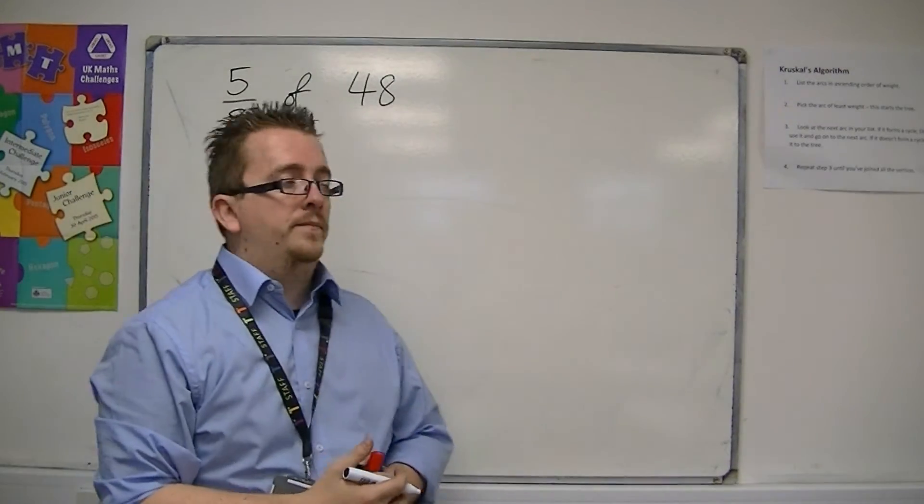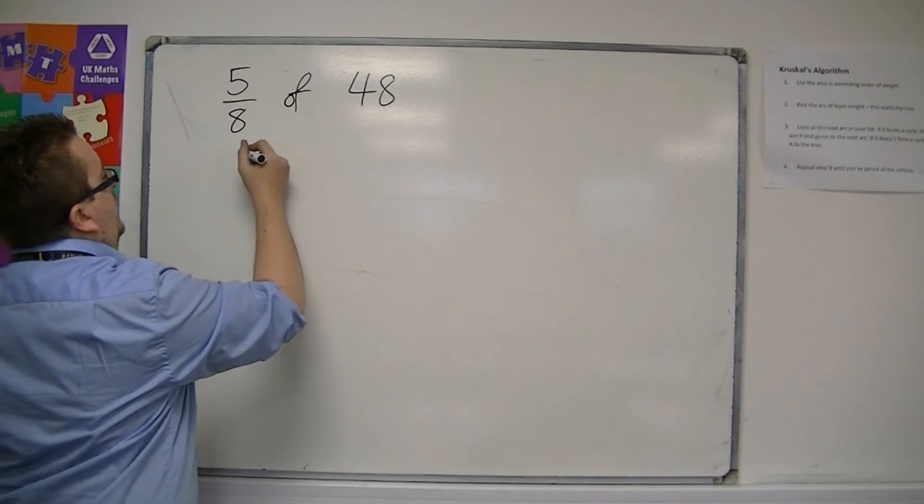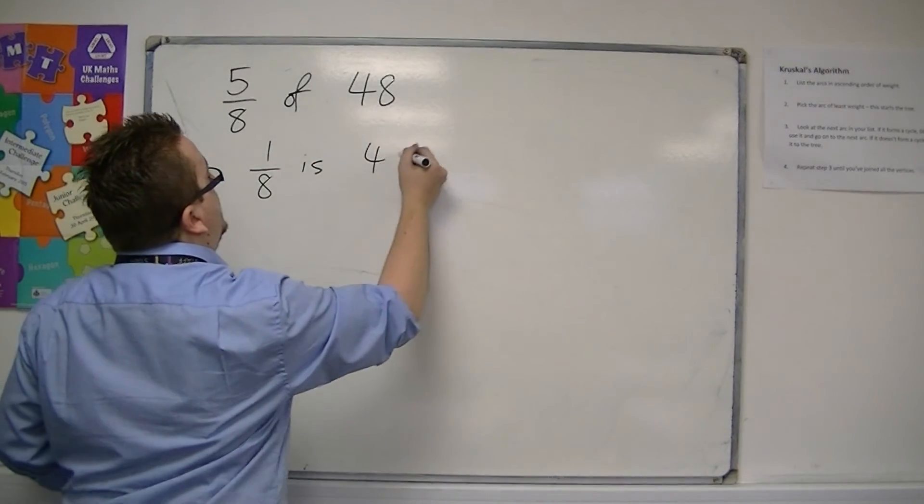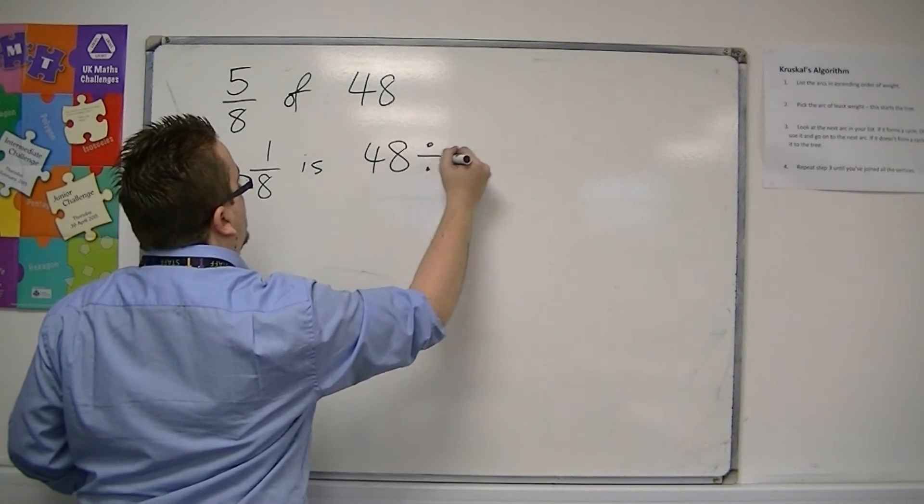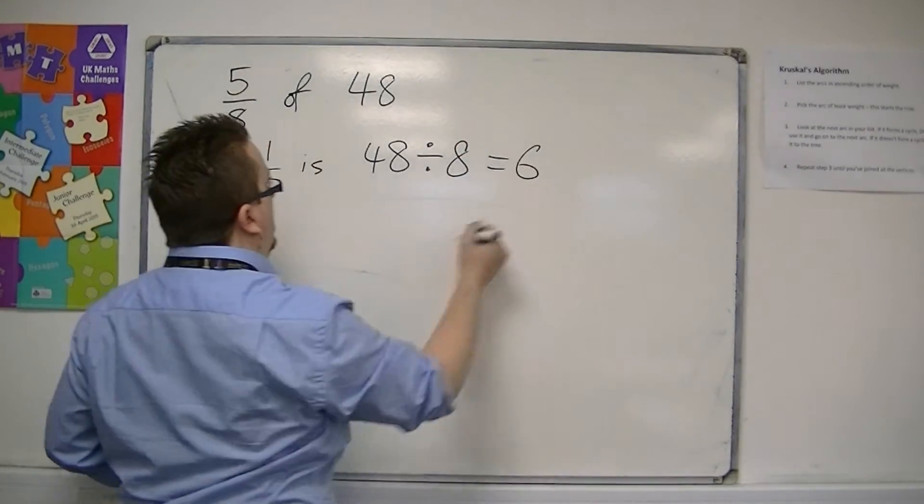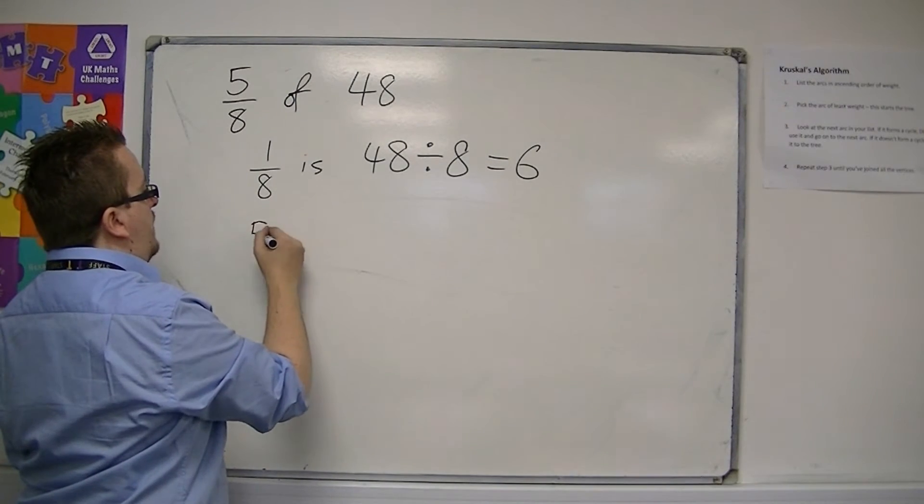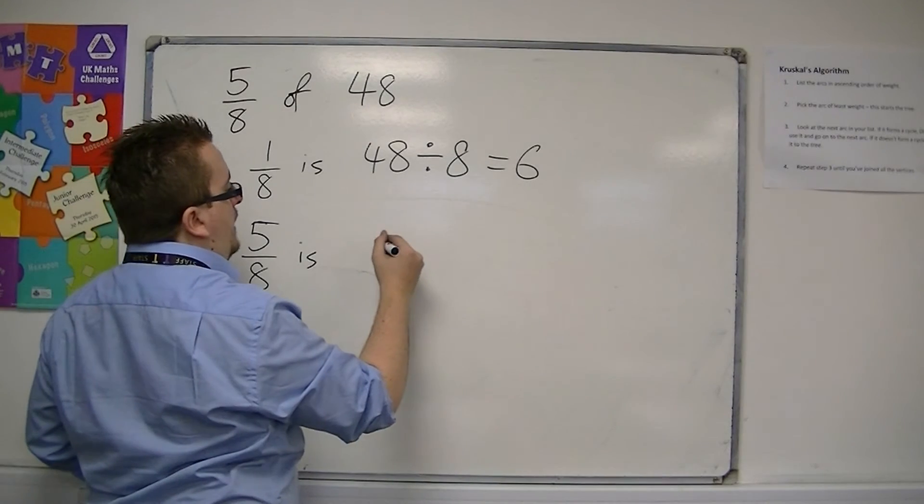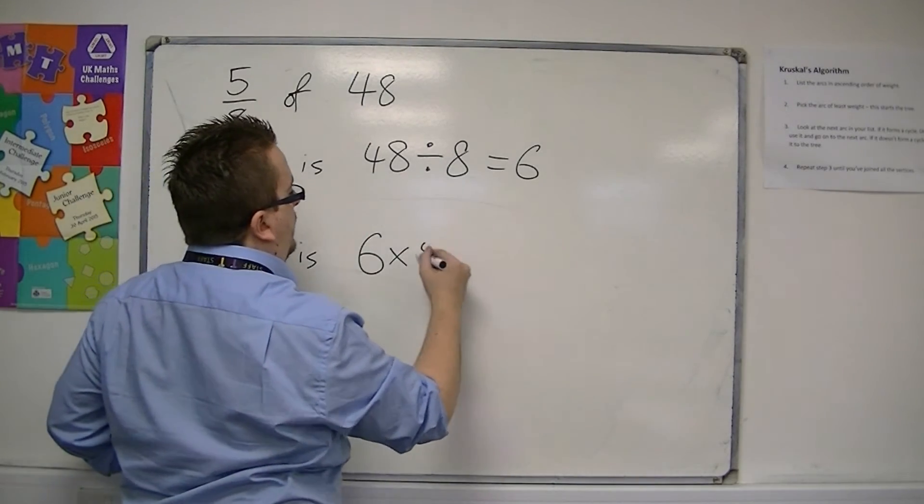So five-eighths of 48. So we look at finding one-eighth by dividing by the bottom. So 48 divided by eight is six, and then five-eighths is found by multiplying that six by five.